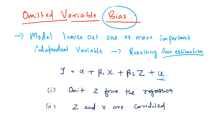Two conditions have to be satisfied in order to have omitted variable bias. The first condition is that we omit one or more important variables which are impacting your dependent variable. Let us say z is the important variable which is highly correlated with and also impacting the dependent variable, and z is omitted from the linear regression. The second condition is that the omitted variable z is also correlated with another independent variable x. Under this circumstance, this will create omitted variable bias.